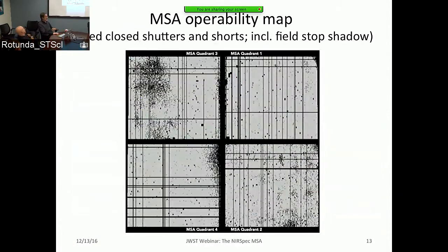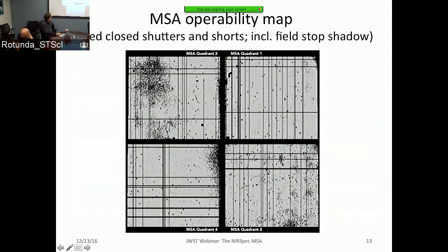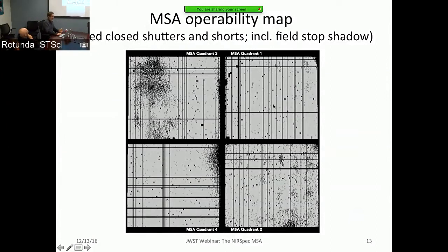The MSA is not a perfect device — it has some cosmetic features where not all apertures are operable. This operability map shows in black all the shutters that are failed closed, with light areas showing operable shutters. It looks worse than it really is — this is a total of almost a quarter of a million shutters across all four quadrants, so we're zoomed out considerably. We take failed shutters into account when planning observations.